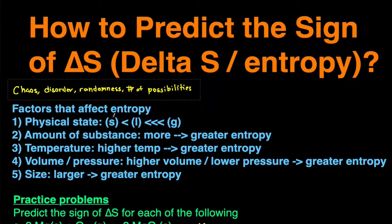What are some factors that affect entropy? First, the physical state. Solids have the least entropy, liquids have more, and gases have much more because gases have a greater degree of freedom and more movement than liquids and solids do.